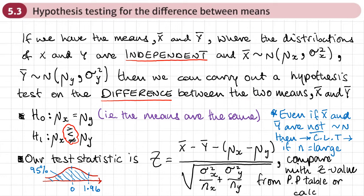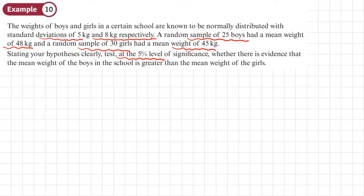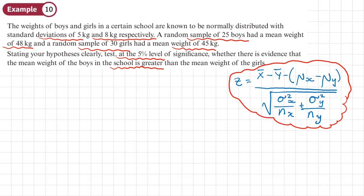Example 10: The weights of boys and girls in a certain school are known to be normally distributed with standard deviations 5 kg and 8 kg respectively. A random sample of 25 boys had a mean weight of 48 kg and a random sample of 30 girls had a mean weight of 45 kg. I'll start by writing down the formula and then the values given in the question.